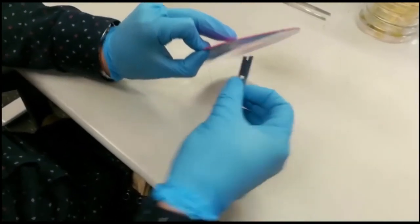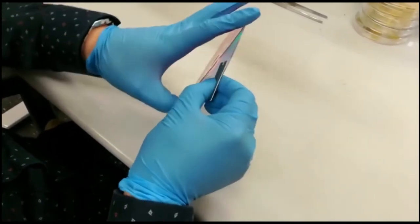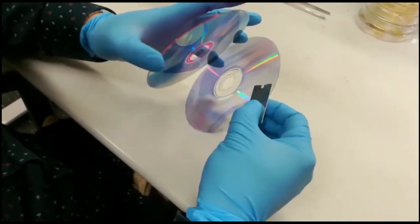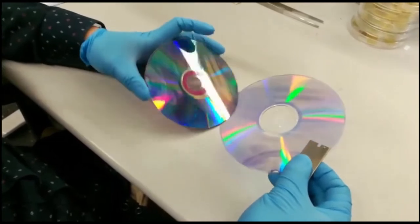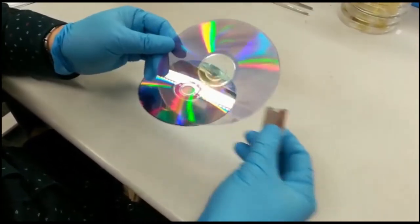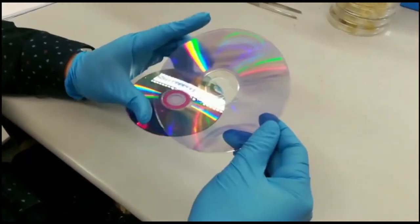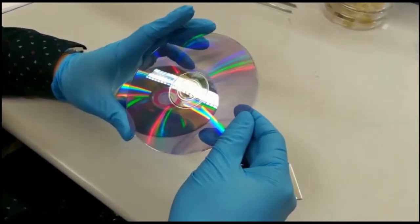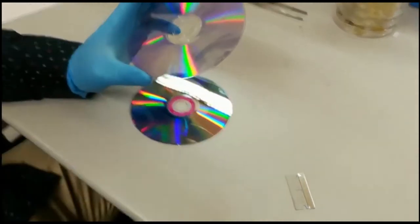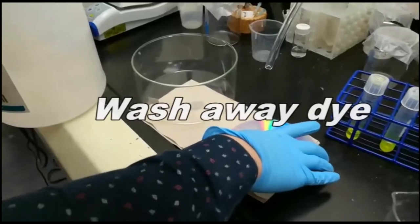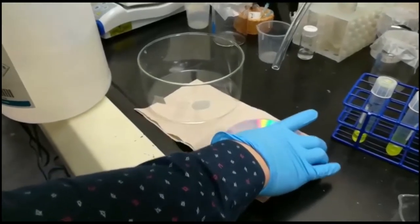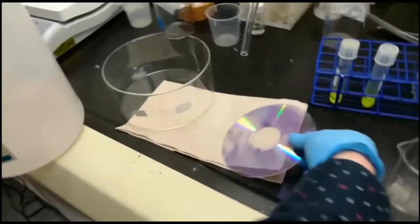We can separate the two polycarbonate films of the DVD, and then we will use this one as a mold for the PDMS soft lithography. As you can see, we already have a polycarbonate film, but the organic dye is coated on this film.